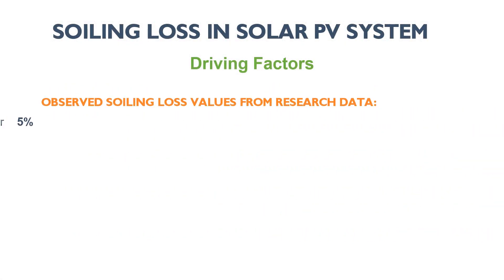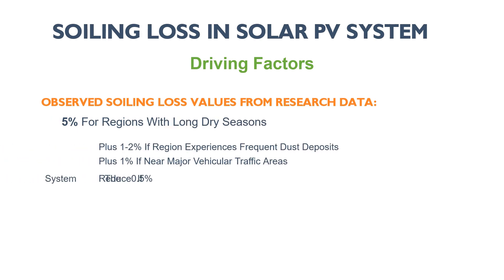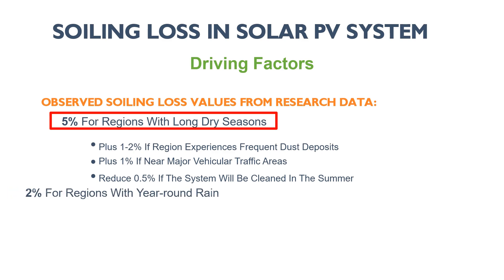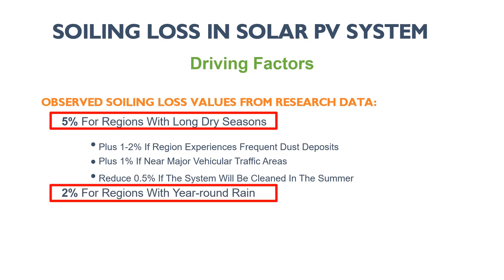Soiling loss values observed from a large number of solar plants throughout the world in recent years are as follows: five percent for regions with long dry seasons; add one to two percent if the region experiences frequent dust deposits; add one percent if near major vehicular traffic areas; remove 0.5 percent if the system will be cleaned in the summer; and two percent for regions with year-round rain.